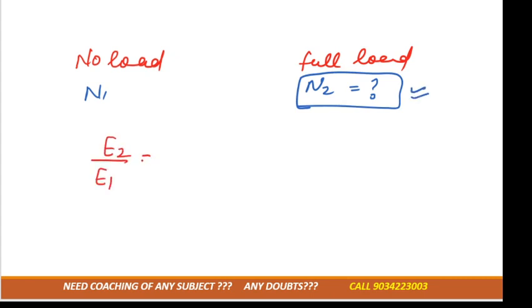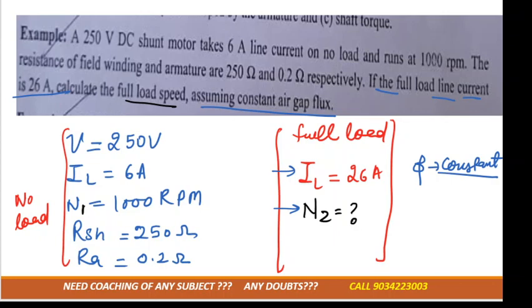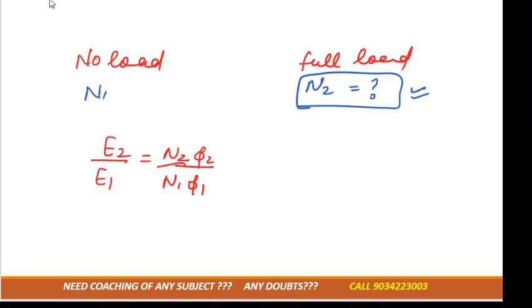We'll use this formula: E2/E1 = N2/N1 × φ2/φ1. Now read the question - they have mentioned assuming constant air gap flux, means whether it is the condition of no load or full load, flux is constant. So if the flux is same, we can assume that φ1 equals φ2. We can cancel out φ1 and φ2 because these are same.